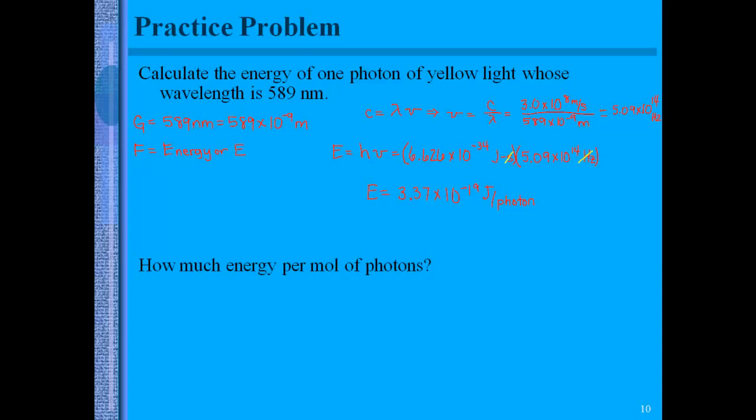If we know the energy of one photon, we can find the energy per mole of photons, and we can do that by using our Avogadro's number. So taking our energy per photon, and then using our conversion that 6.02 times 10 to the 23 photons will be 1 mole photons, we can calculate the energy of 1 mole as 2.03 times 10 to the 5th joules.